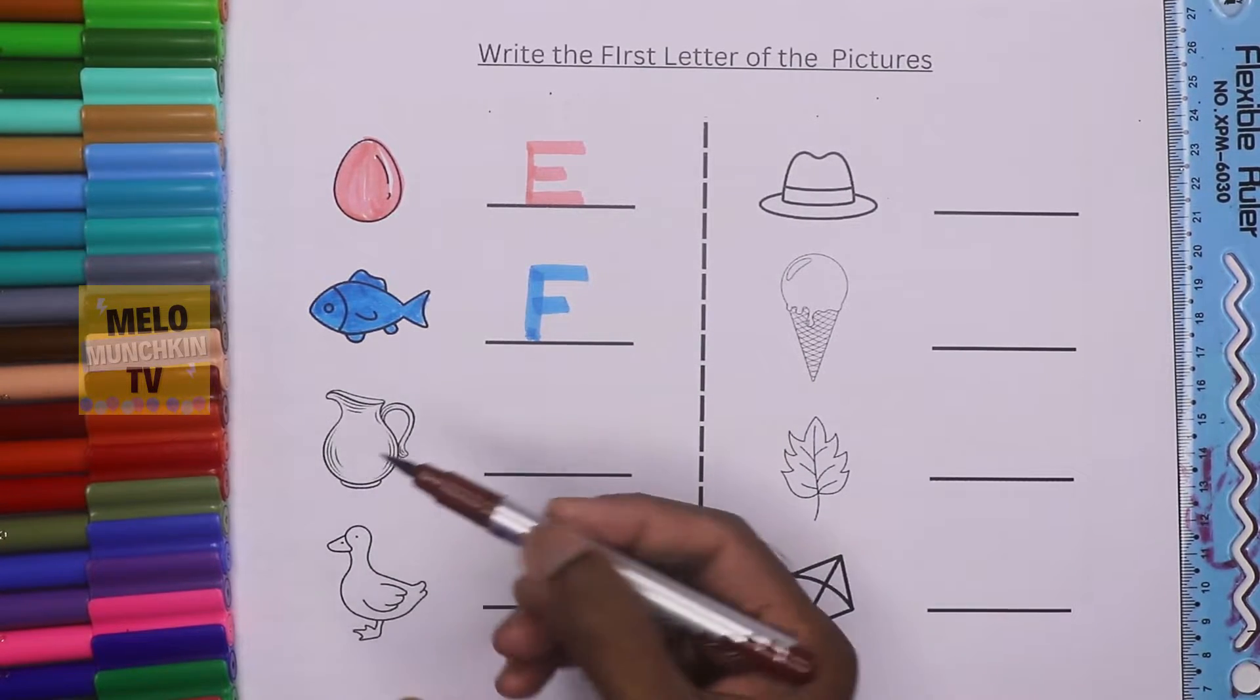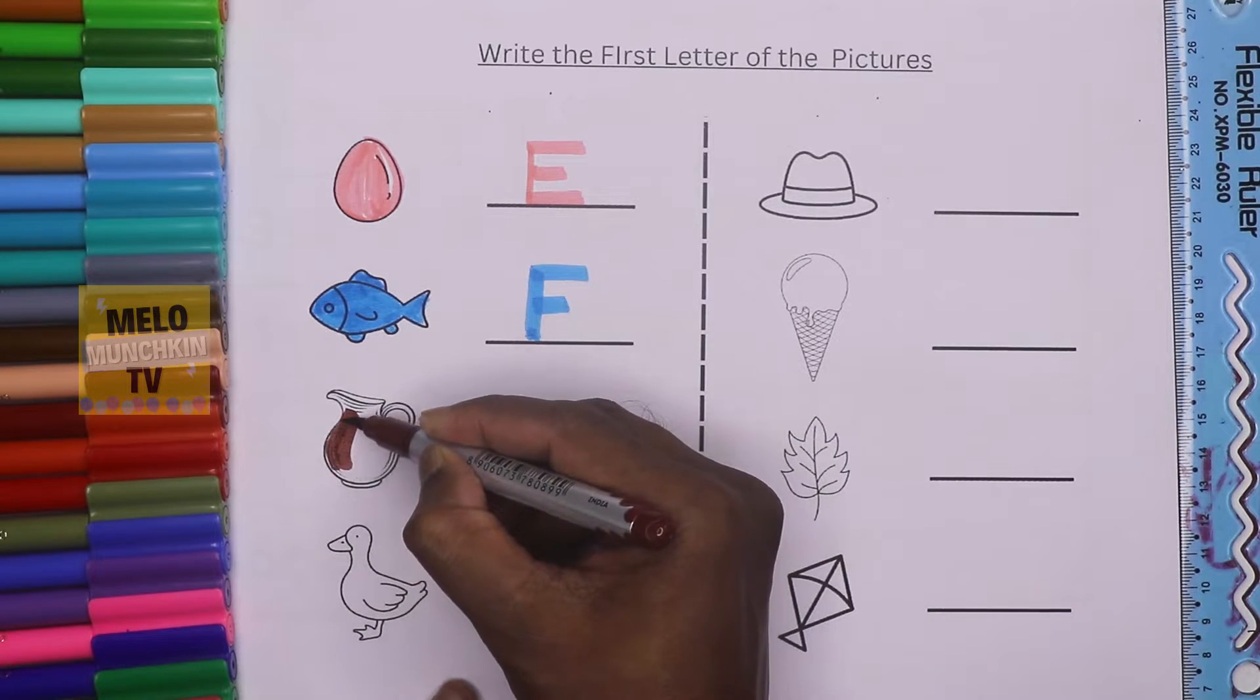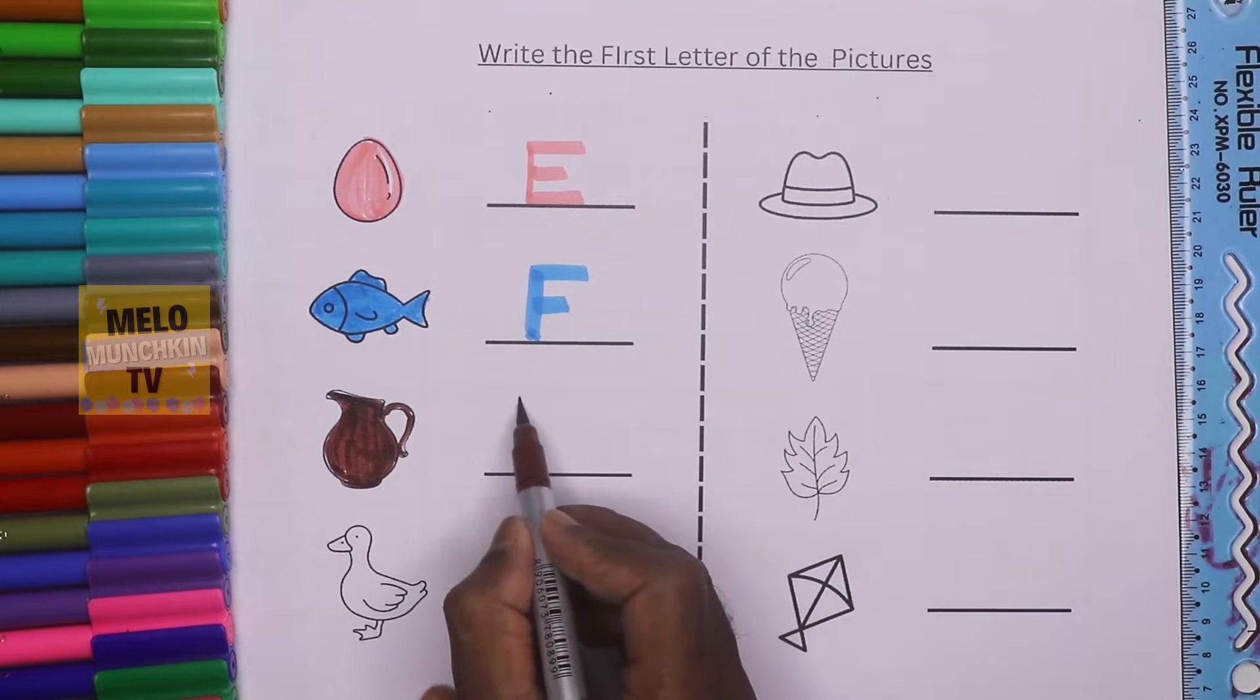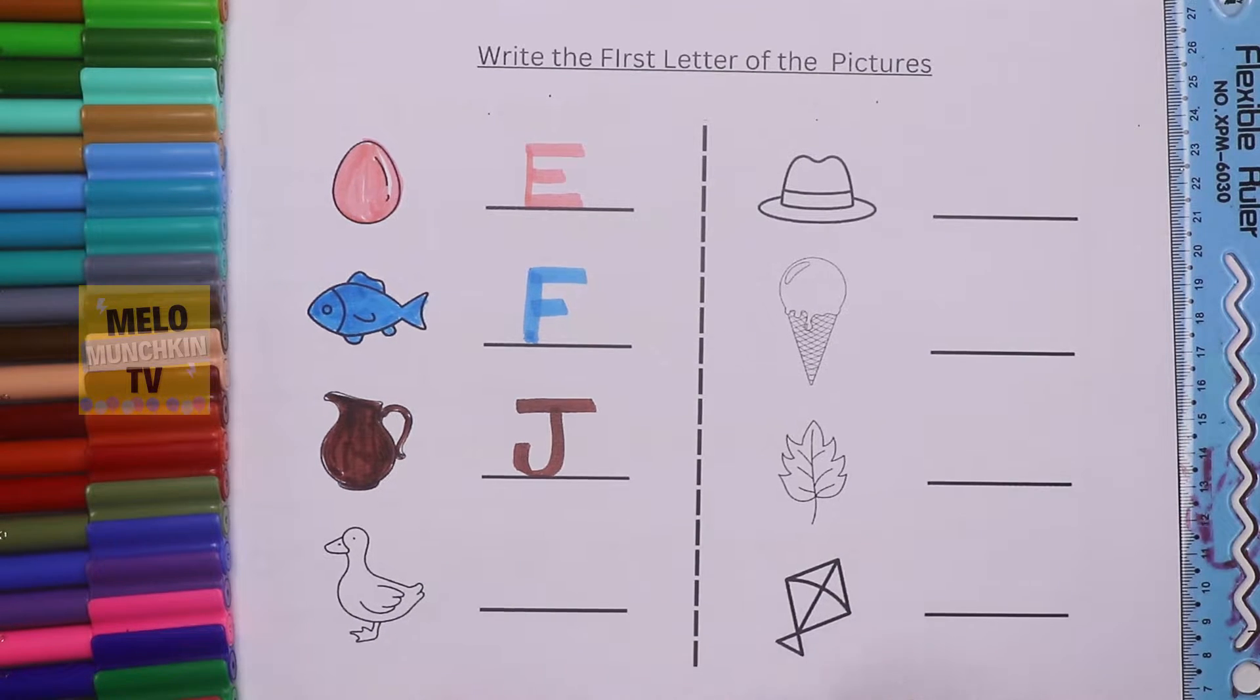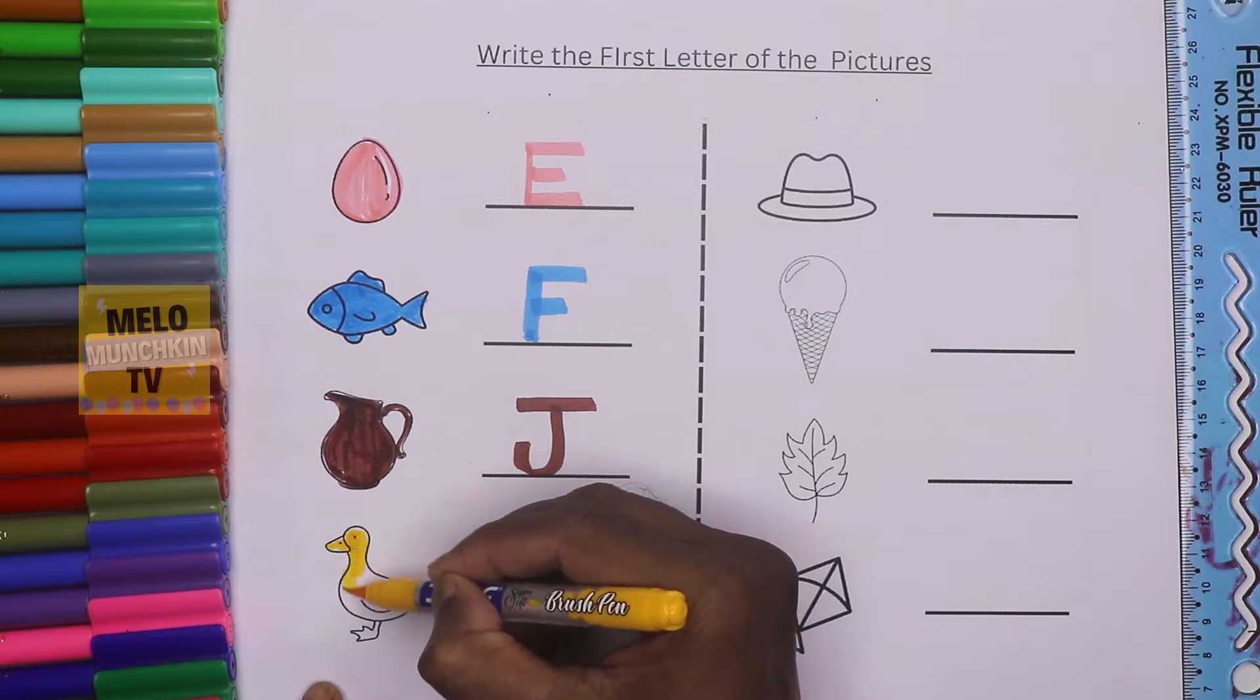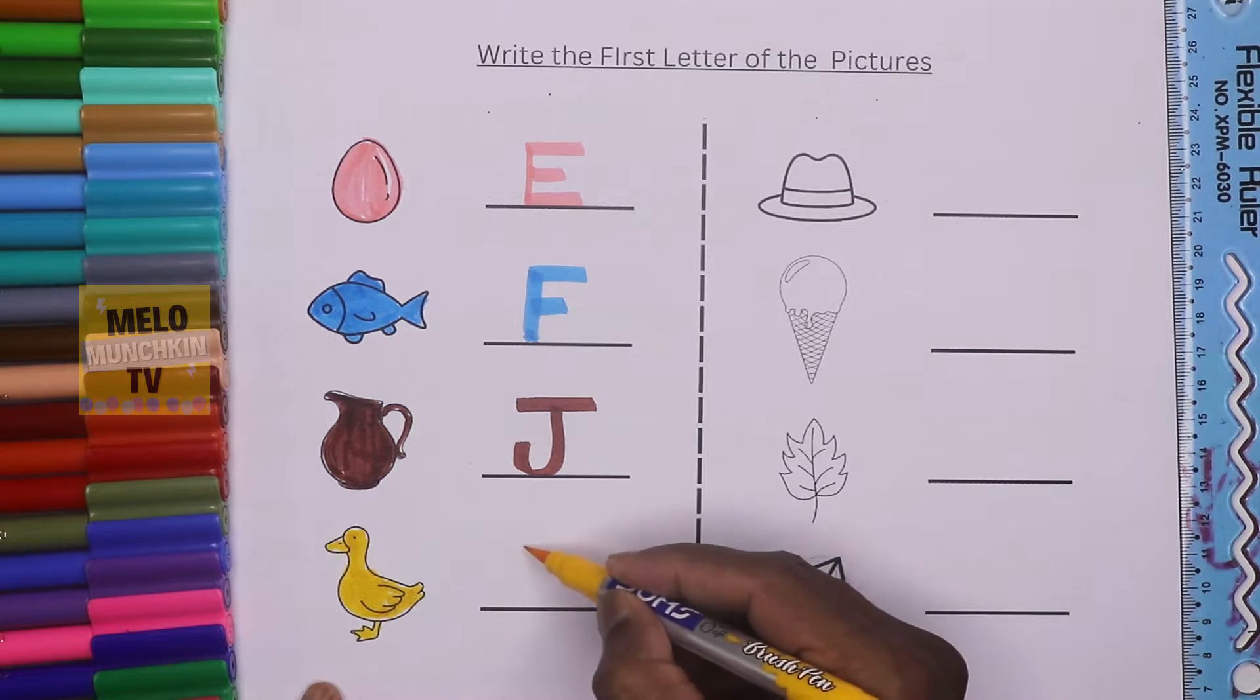Now I'll use yellow color to color this duck. Duck starts with the letter D, so I'll write D. D for duck, J for jug, F for fish, E for egg. Now I'll take red color to